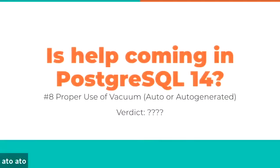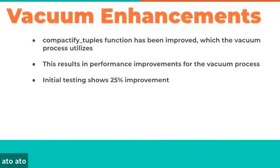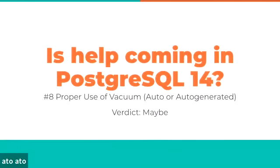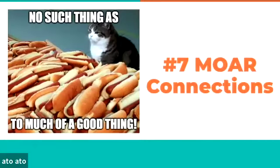For larger customers with high transaction volumes, Postgres 14 brings improvements to a process called 'compactify tuples,' which helps the vacuum process itself and shows roughly a 25% performance improvement in initial testing. This should impact a large majority of users since the process happens automatically — that's a pretty solid quarter improvement.